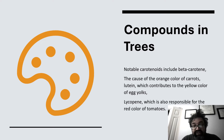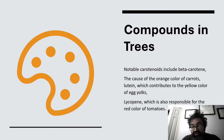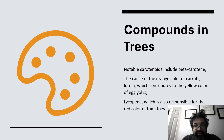There are compounds in the trees which cause the changing of the leaf colors, and notably carotenoids. Beta-carotene gives you that orange color, the richness of the color — the cause of the orange color of carrots. Lutein also contributes to the yellow color of the egg yolk, just to give you a sense of where some of this comes from. Lycopene, which is also responsible for the red color of tomatoes, is also important, and is one of the carotenoids.